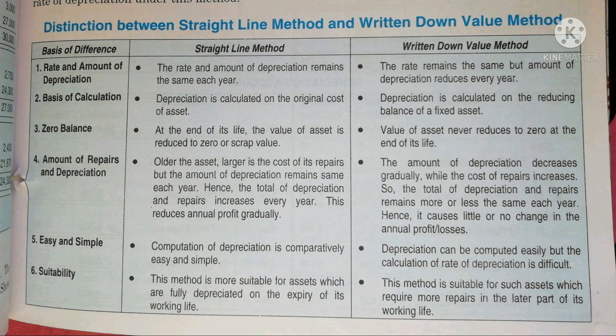Whereas under the Written Down Value Method, the value of assets never reduces to zero at the end of its life, because we always calculate depreciation on the reducing balance of fixed assets. Therefore, the value of assets never reduces to zero at the end of its life under the Written Down Value Method.